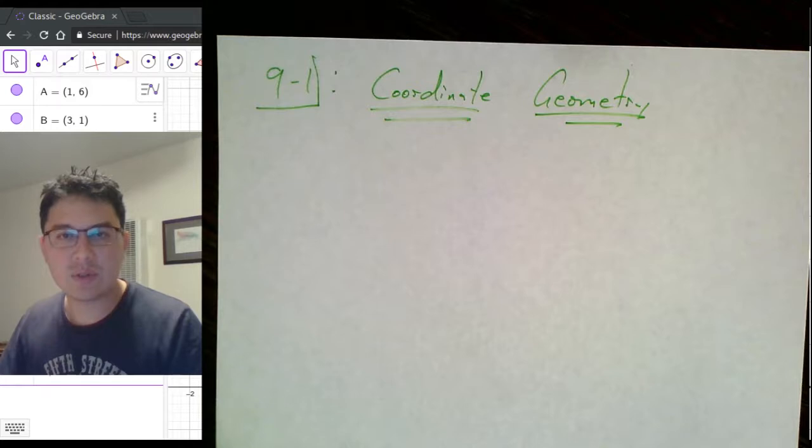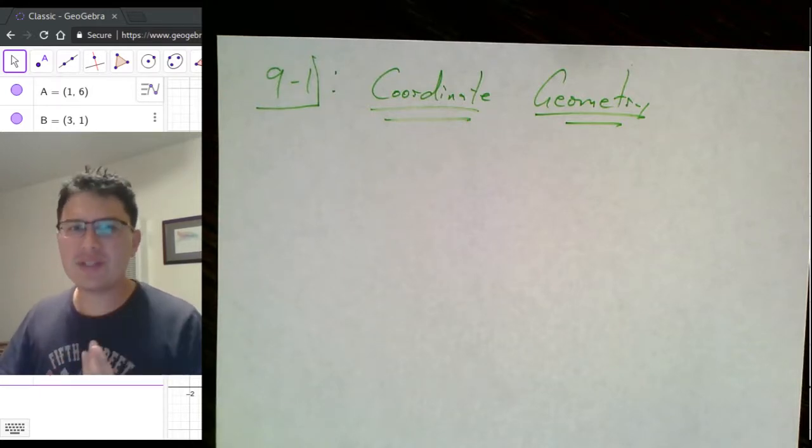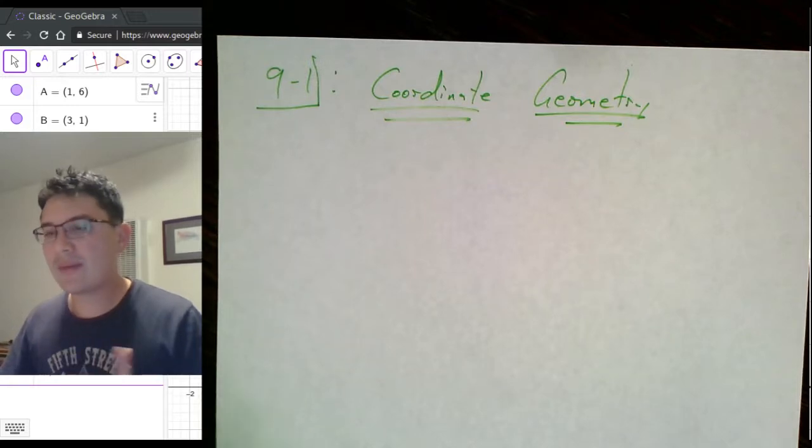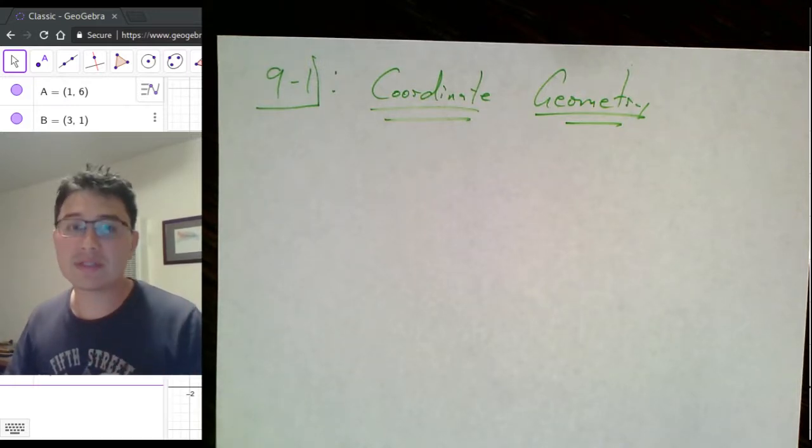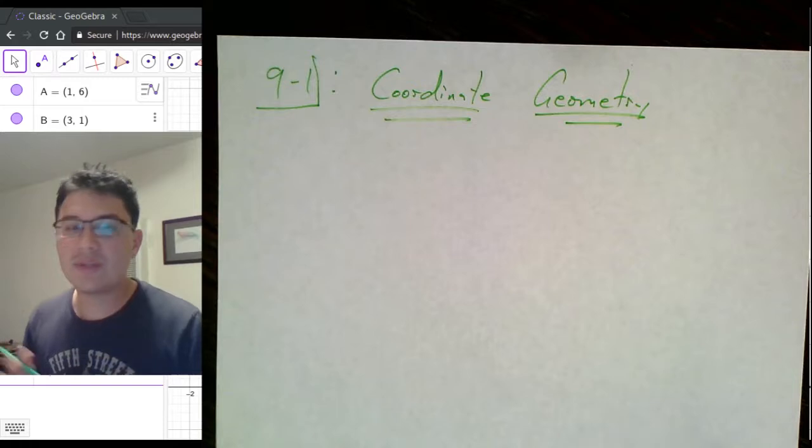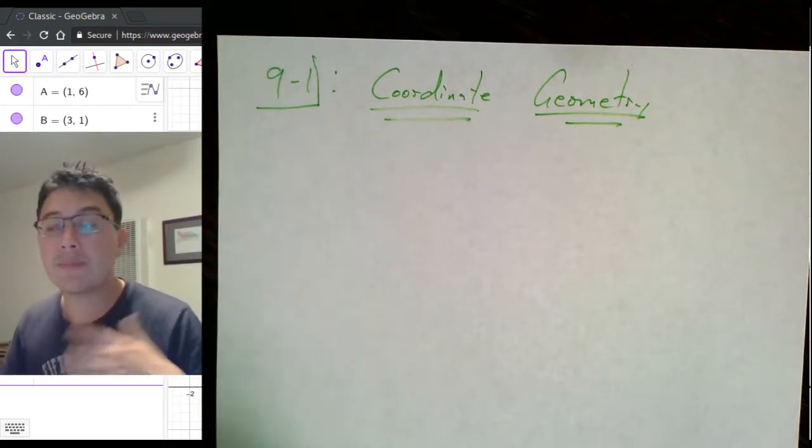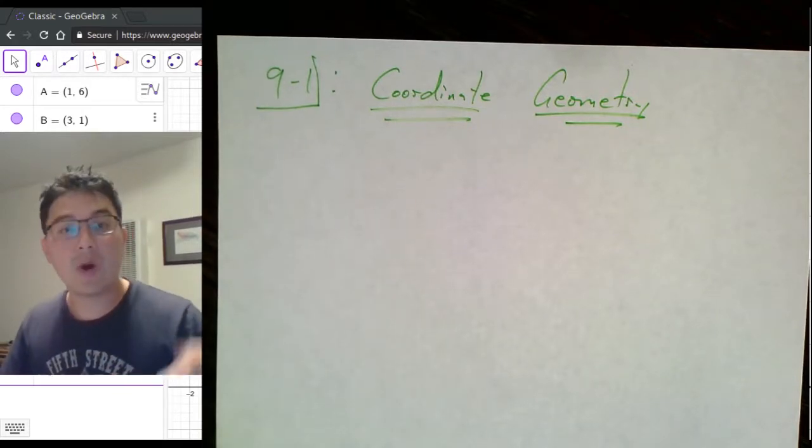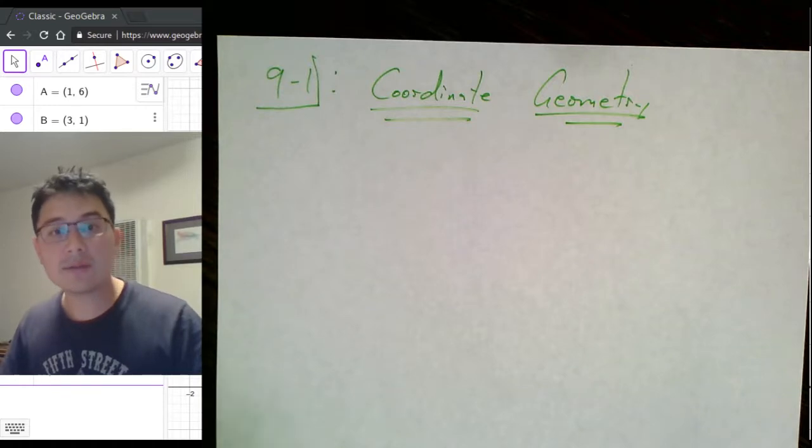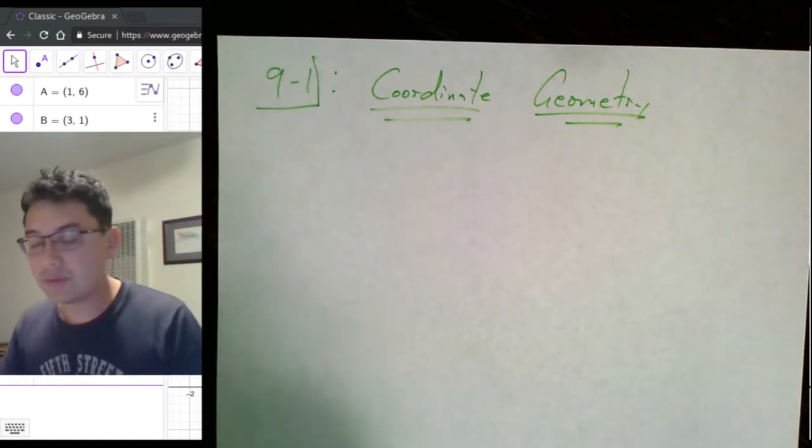We're going to be concentrating on section 9-1 out of the textbook. This is the introductory chapter to coordinate geometry. We've actually been doing this more or less for the entire school year, but this specific chapter is one where we do some more focused study on it. We take some previous algebraic ideas that we've had and combine them with a lot of the properties that we've learned when we were working with triangles and quadrilaterals.